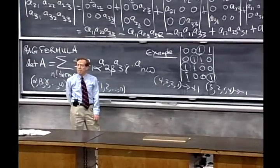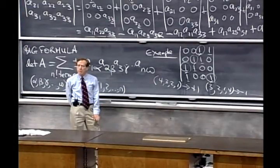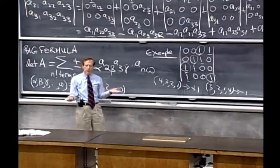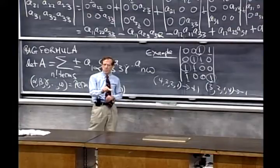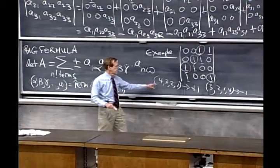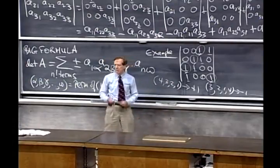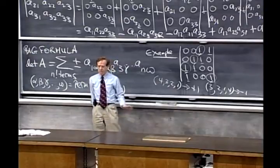What's the determinant? Zero. The determinant is zero for that case. Because we were able to check the 24 terms: 22 of them were zero, one of them was plus one, one of them was minus one. Add up the 24 terms, zero is the answer.